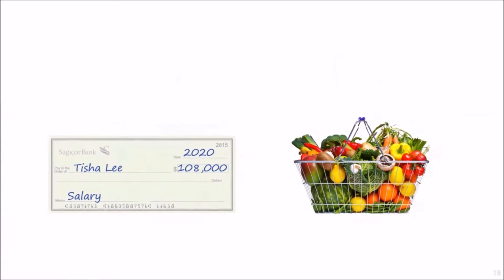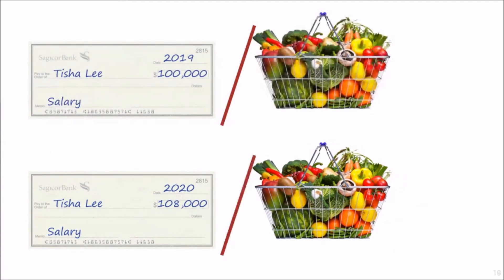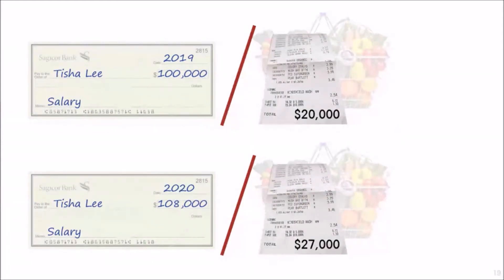Suppose your salary is a hundred thousand dollars a month — that's its nominal value. The following year your salary goes up to a hundred and eight thousand dollars a month, so you've had a nominal increase in pay. But in the first year, when your salary is a hundred thousand, a typical basket of groceries costs twenty thousand dollars.